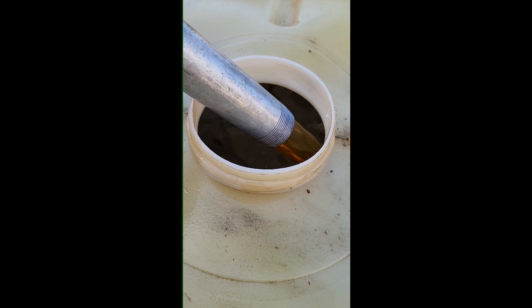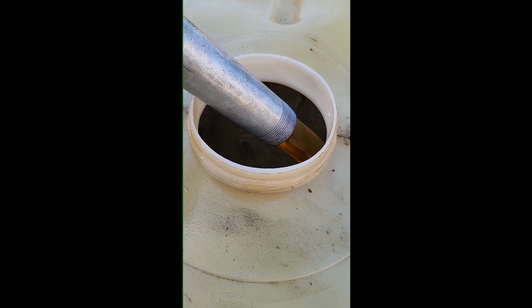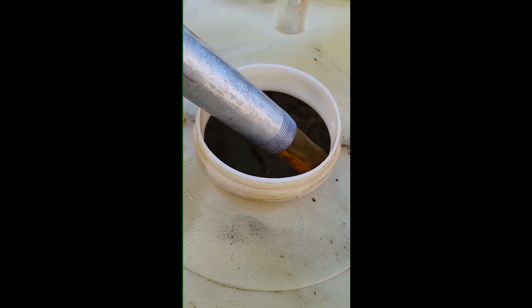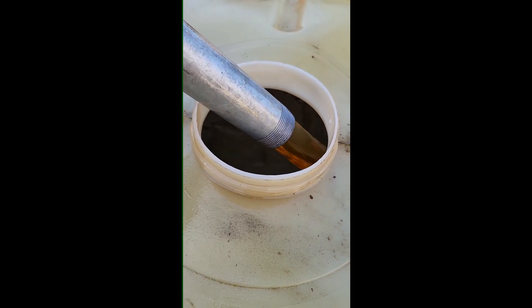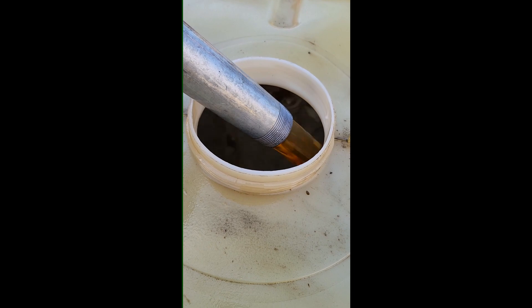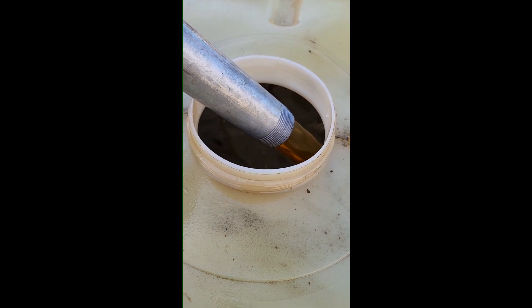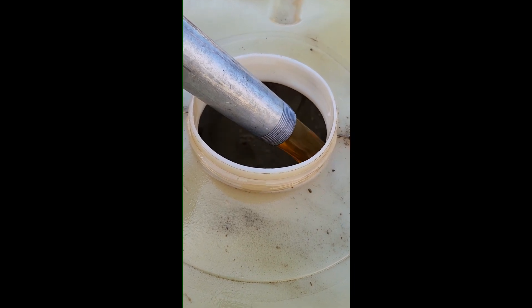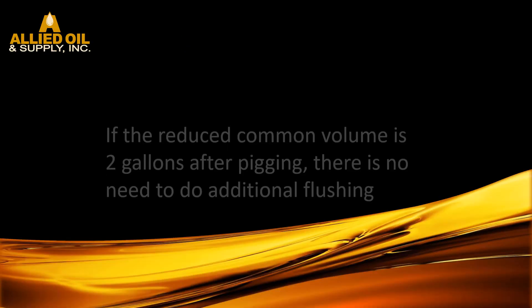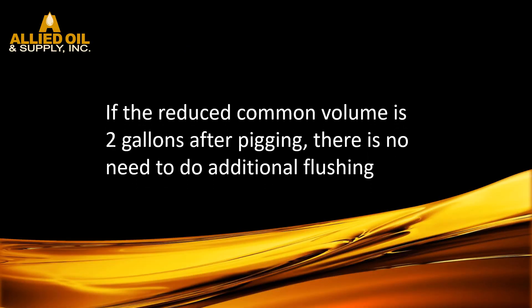Same as if you were going to pump 75 gallons of Rotella 15W40 from a Pennzoil 5W20 — if the reduced common volume is two gallons after pigging, there is no need to do any additional flushing.